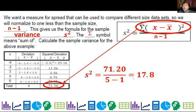And we're going to just take that and put it over n minus one our sample size. We have five data points. So it's five minus one. We're going to divide by four. So that gives us about 17.8.